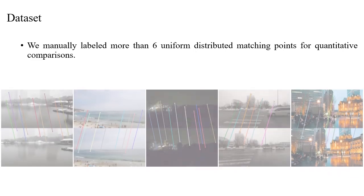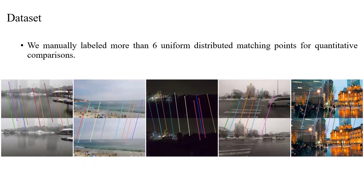For each evaluation image pair, we manually labeled more than six uniformly distributed matching points for quantitative comparisons. Some examples are shown below.